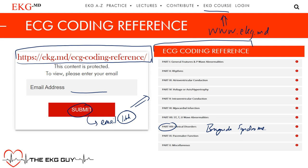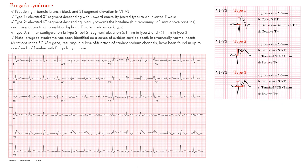Let's look at Brugada syndrome. There are a few features to look out for. First, we're focusing on leads V1 through V3. What we're looking for is considered a pseudo right bundle branch block pattern, with ST elevation in those leads. 'Pseudo right bundle branch' means it appears like a right bundle branch — in V1 through V3 we may see an RSR prime or 'rabbit ears' pattern.